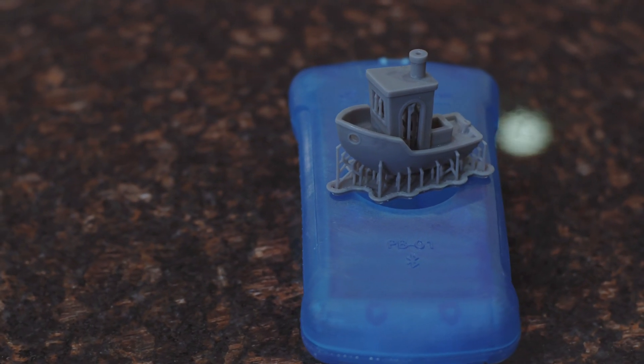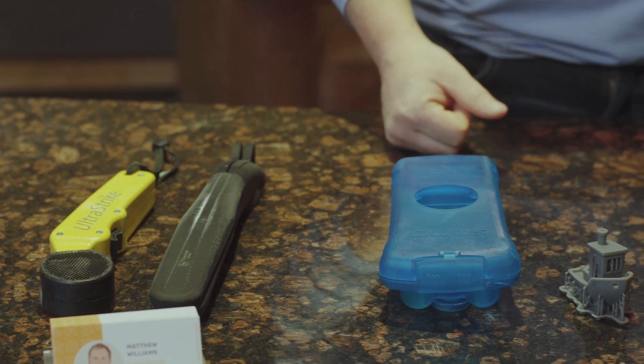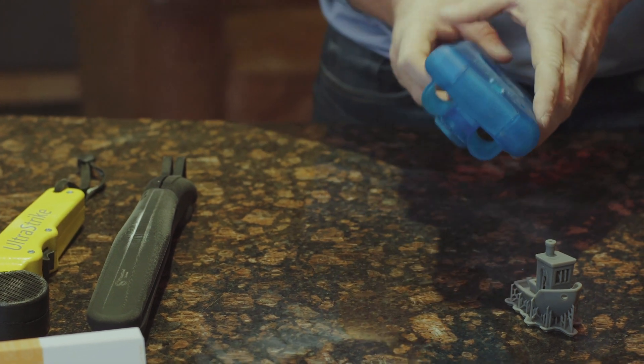And then we have the SLA technology, which is stereolithography. And basically what this is, is it's using a photopolymer resin, which is in liquid form until you shine a UV light on it to get it to harden and cure.